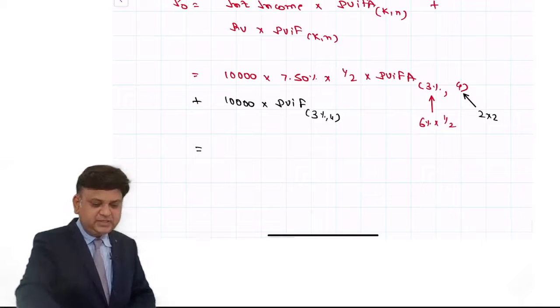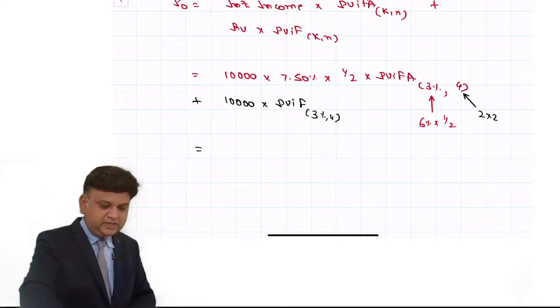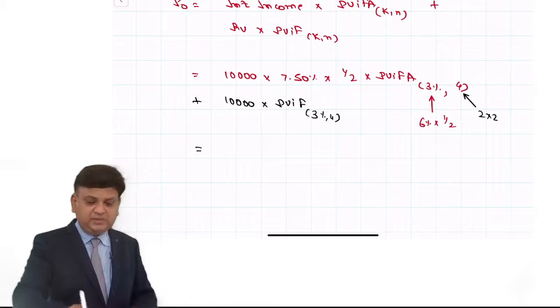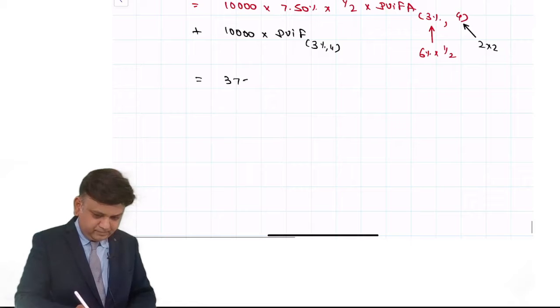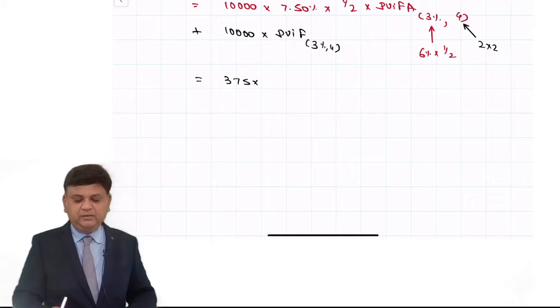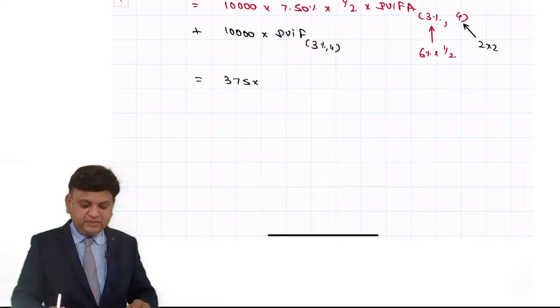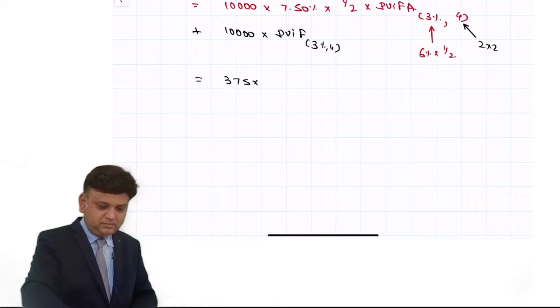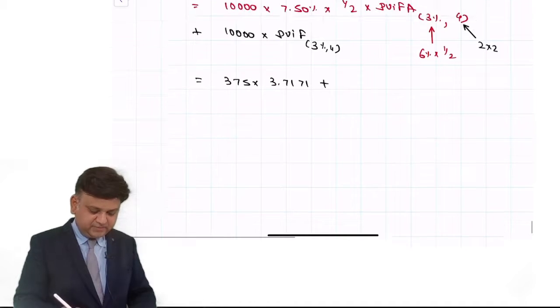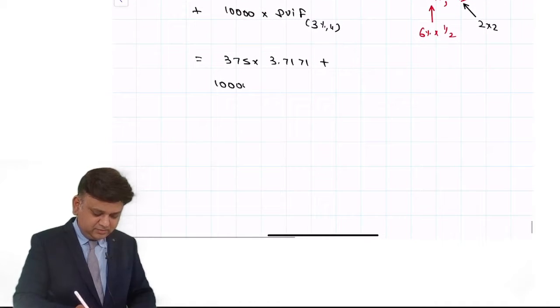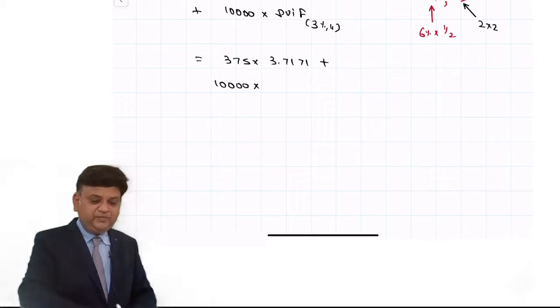So we understand it is 10,000 into 7.5% divided by 2 is 375 into PVIFA that is 3% for 4th period, 1, 2, 3, 4, so it is 3.7171 plus 10,000 into PVIF 1 divided by 1.03.